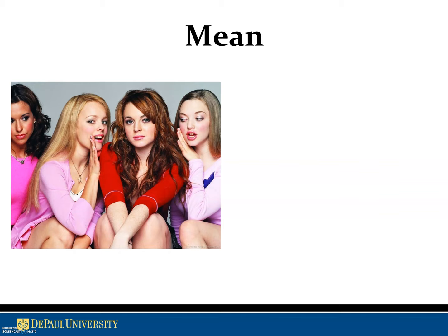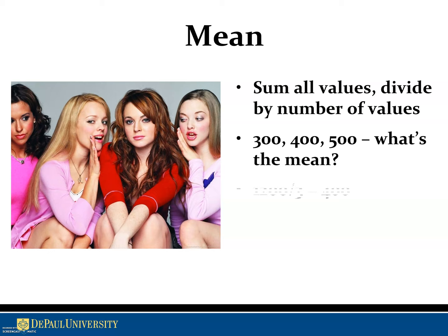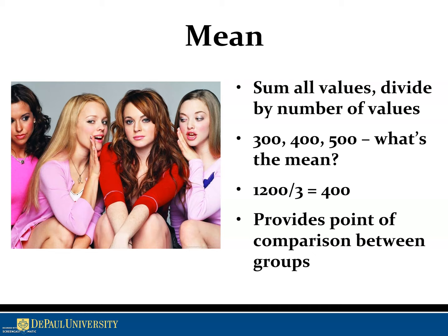Going more in depth on the mean — it's not for mean girls — it's the sum of all values divided by N. For example, what's the mean of 300, 400, and 500? We sum those to 1,200, divide by 3, and get 400. It provides a good point of comparison between groups and will be the most common measure you use, but you want to be aware of exceptions and outlier situations when you're not going to use mean.